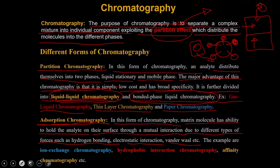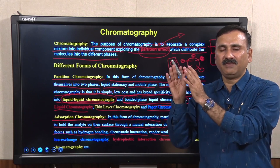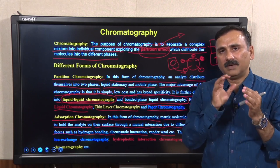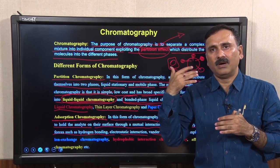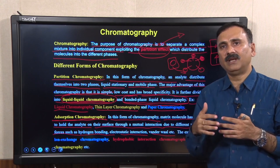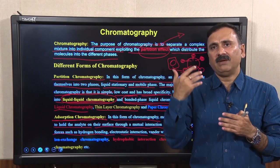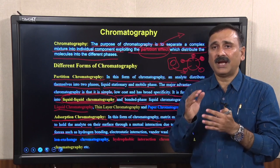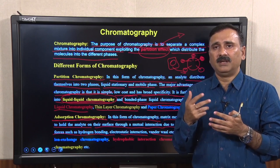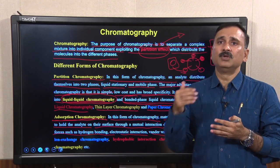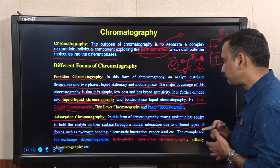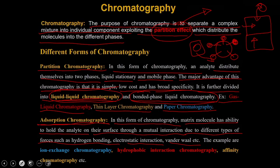Partition chromatography is simple, low cost, and has broad specificity — meaning it is not very targeted toward specific molecules. Adsorption chromatography, on the other hand, can be modified to be specific for a particular molecule, providing specificity and becoming more user-friendly and convenient. Classical examples of adsorption chromatography include ion exchange chromatography, hydrophobic interaction chromatography, and affinity chromatography.